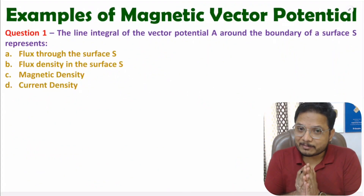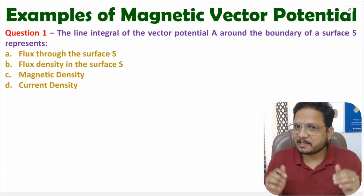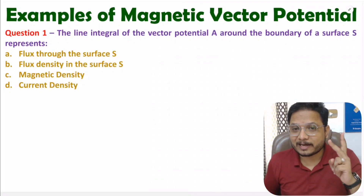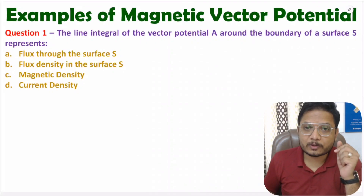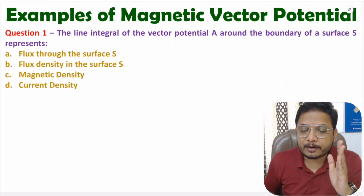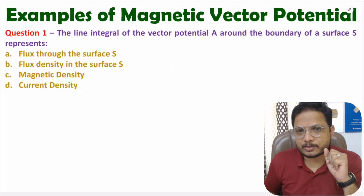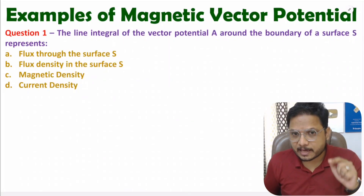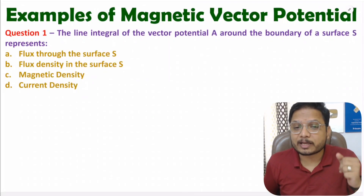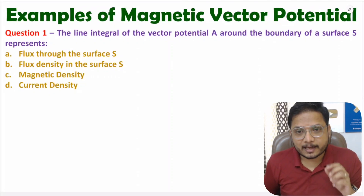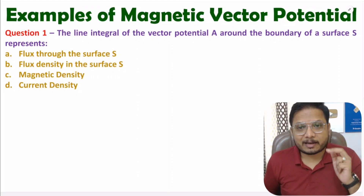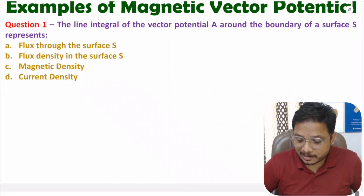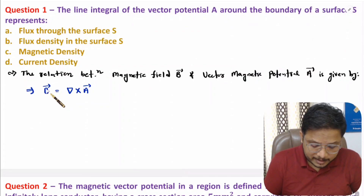Hello friends, welcome to Engineering Funda. In this video I will solve two very interesting problems based on vector magnetic potential. First of all, one should know the basic relation between magnetic field and vector magnetic potential. If magnetic field is B and vector magnetic potential is A, then B equals del cross A — meaning magnetic field is the curl of vector magnetic potential.